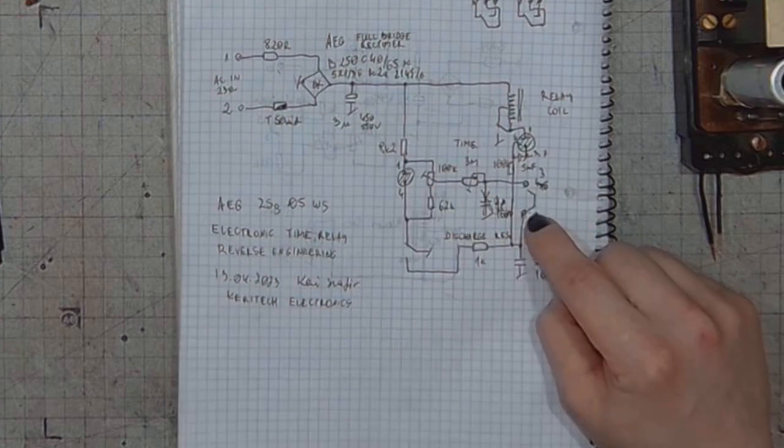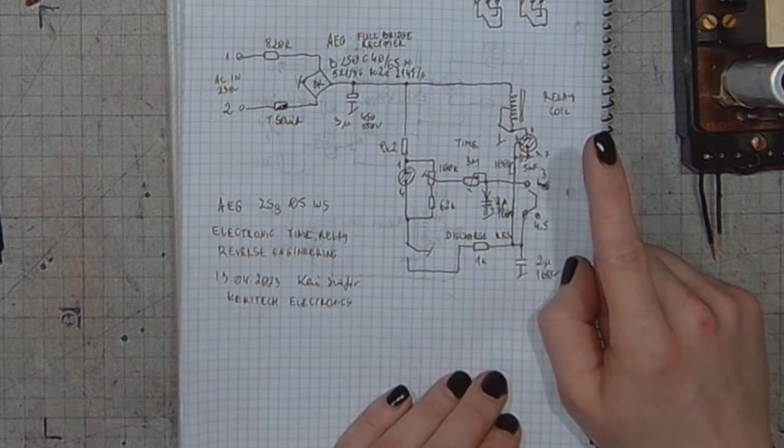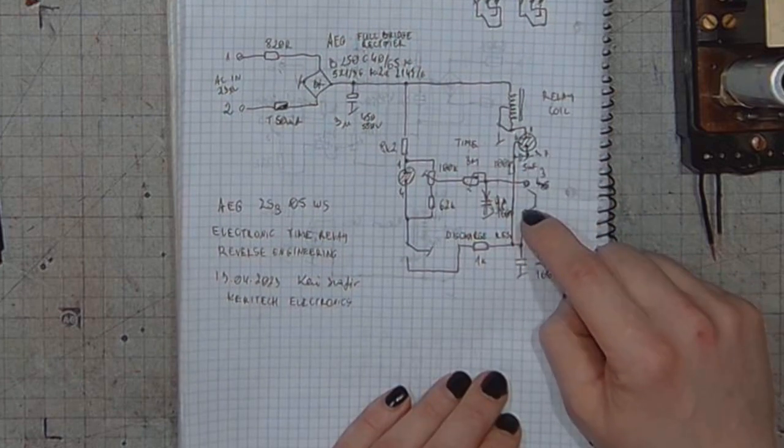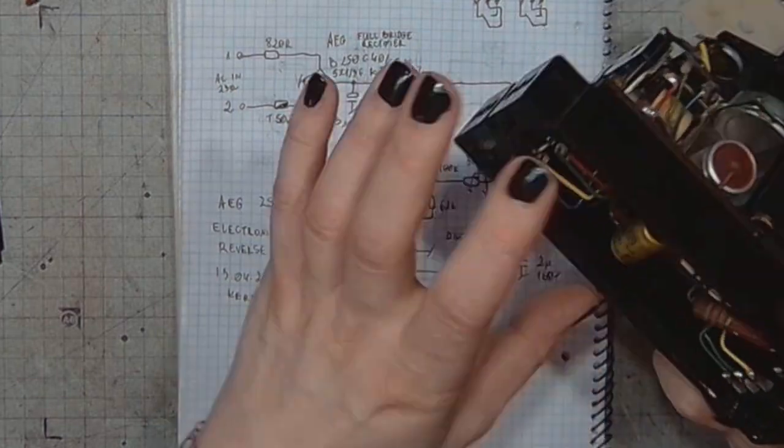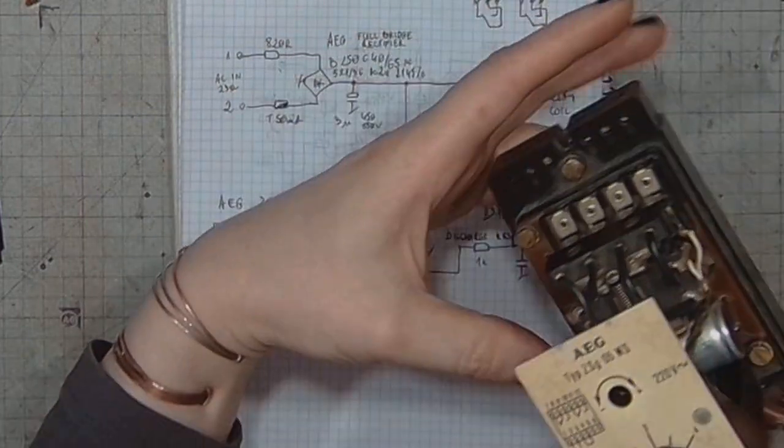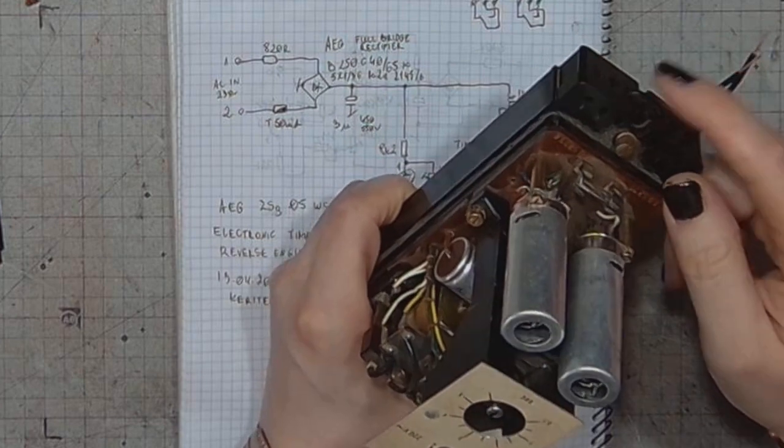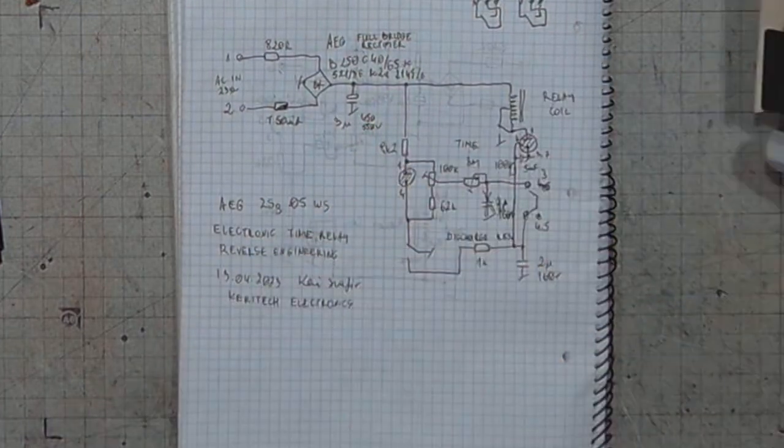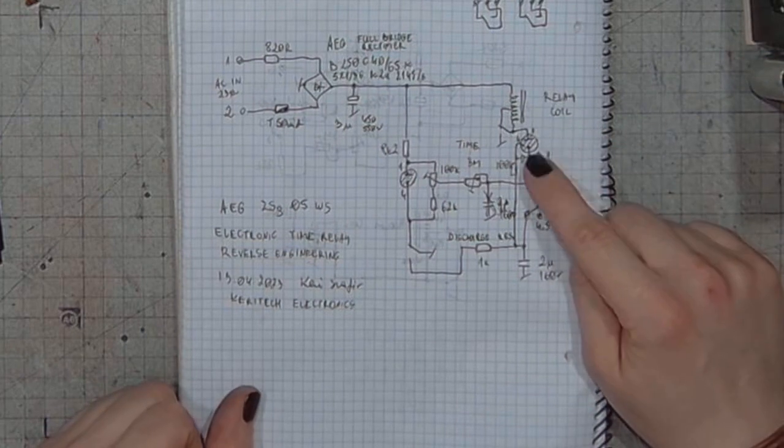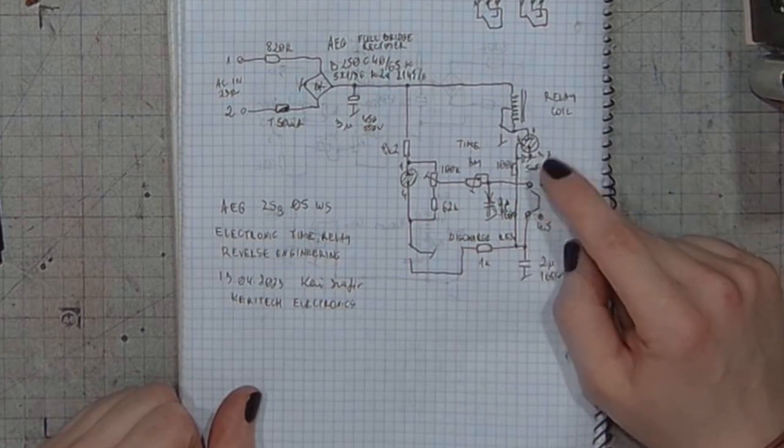Then we've got a jumper between pin number 4 and 5. This jumper is here. Removing it allows us to add an additional enable pin.